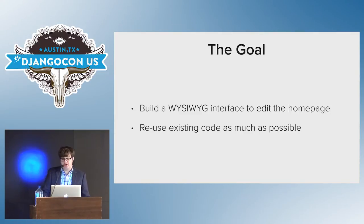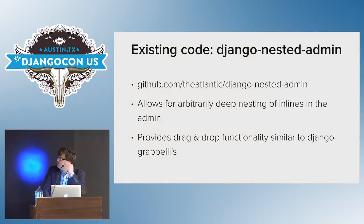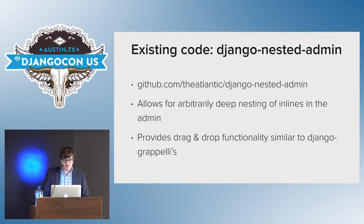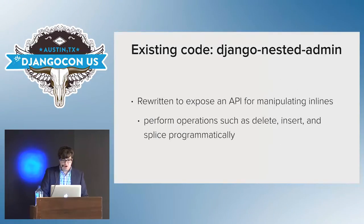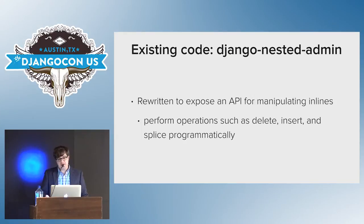The goal was to build a WYSIWYG interface to edit the homepage while reusing as much existing code as possible. That existing code is Django Nested Admin, which you can find on GitHub. It allows for arbitrarily deep nesting of inlines in the admin and provides drag-and-drop functionality similar to Grappelli's that can run with or without Grappelli. I rewrote Django Nested Admin for this project to expose an API so I could call methods that perform operations such as delete, insert, and splice programmatically, rather than relying on event handlers like clicking a button or dragging and dropping.